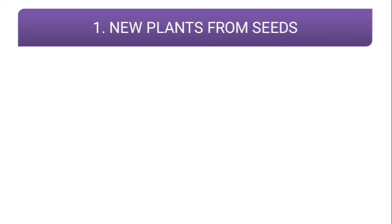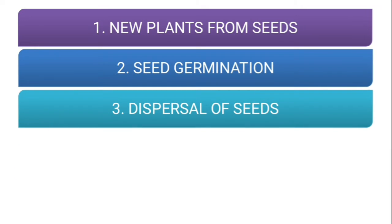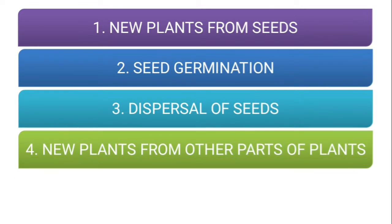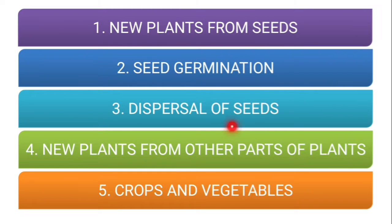In this chapter we discussed about new plants from seeds, seed germination, dispersal of seeds, new plants from other parts of plants, and crops and vegetables. These were the topics we discussed in this chapter.